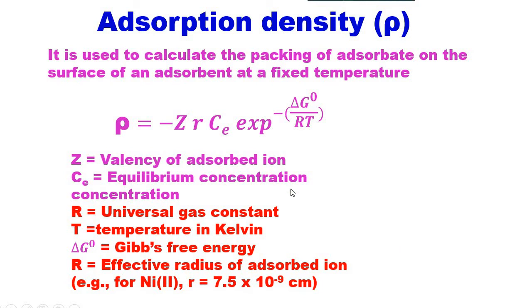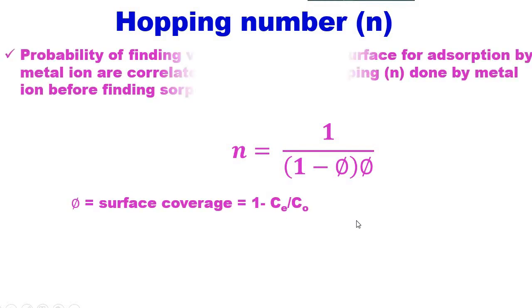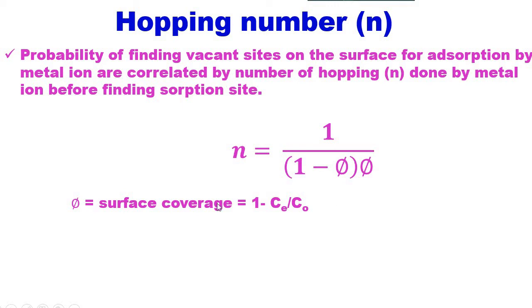Then comes hooping number. Hooping number can be written as N equals 1 divided by (1 minus θ) times θ, where θ is the surface coverage equal to 1 minus Ce divided by C0.